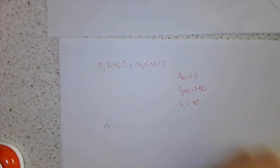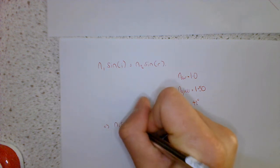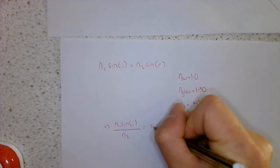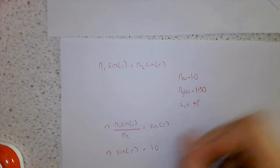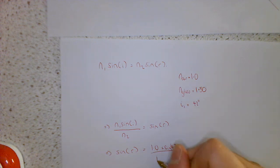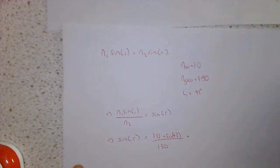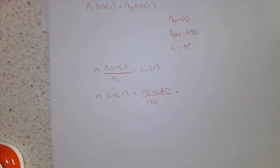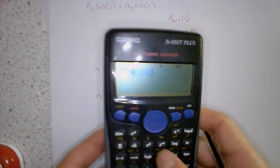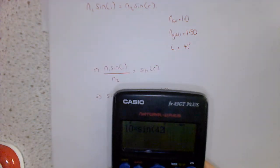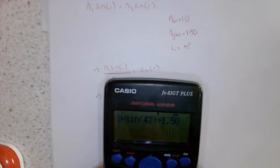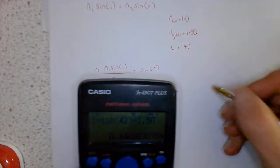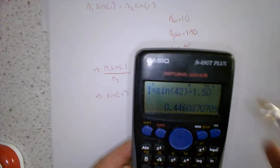So the first thing I'm going to do is make sine R the subject. So I'm going to divide both sides by N2. Because that leaves sine R by itself. So now I'm actually going to calculate what sine R is. So the material before the boundary is air. So we're going to put 1 in. I is 42. So I'm going to times that by sine of 42. And then we're going to divide that by 1.5. And that should give us our sine of R. So we're going to do 1 times by sine of 42, and then divide that by 1.5. And that comes out as 0.446.